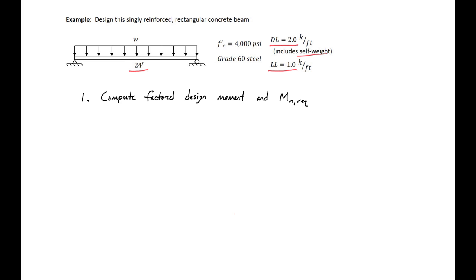We're going to start by computing our factored design moments and our MN required. To do this we'll start by calculating our factored design load WU. We're going to use the load combination 1.2 times dead load — in our case we have a dead load of 2 kips per foot — and 1.6 times our live load, which is 1.0 kip per foot. So we'll get a WU of 4 kips per foot.